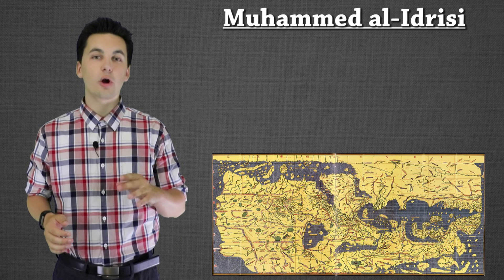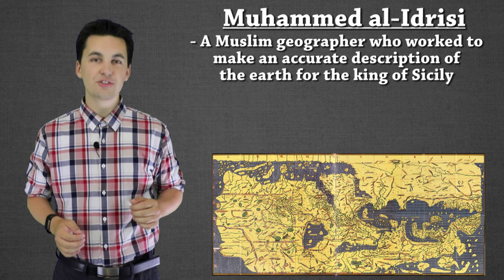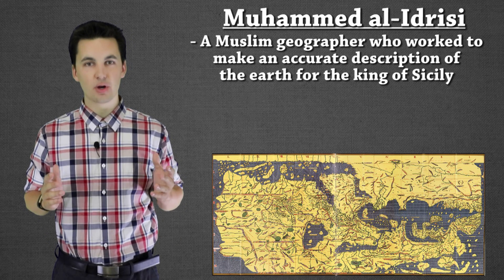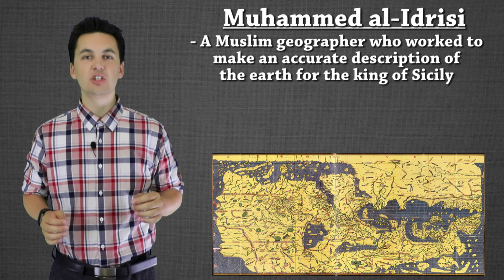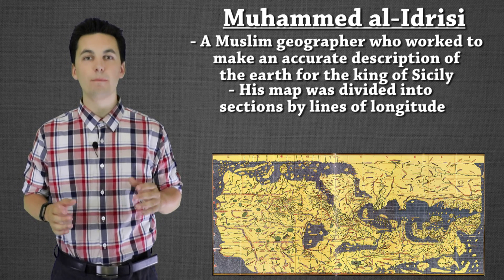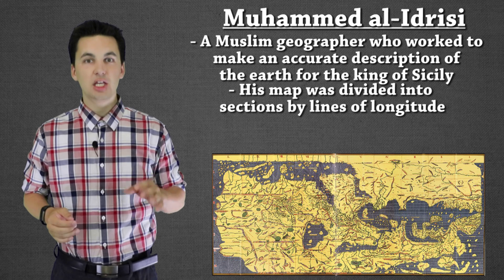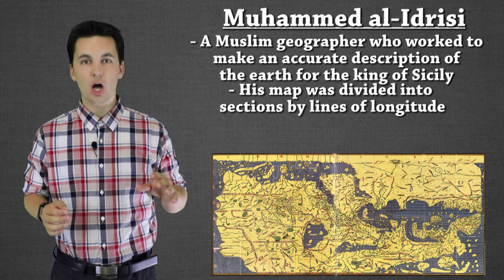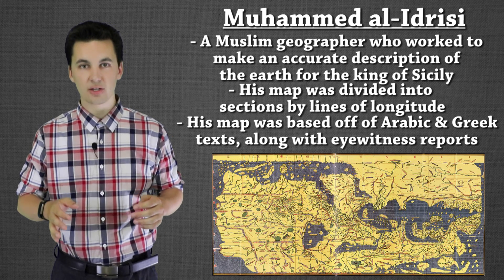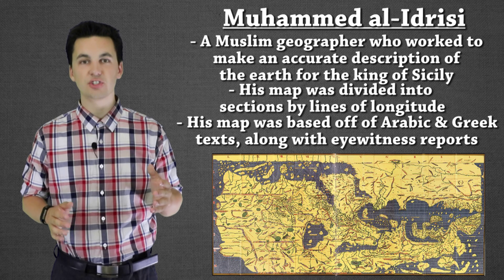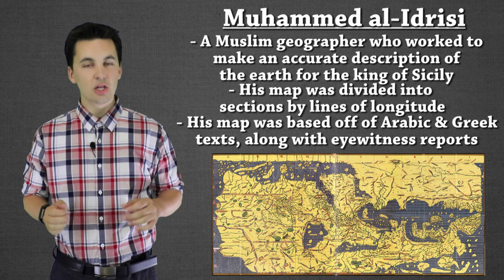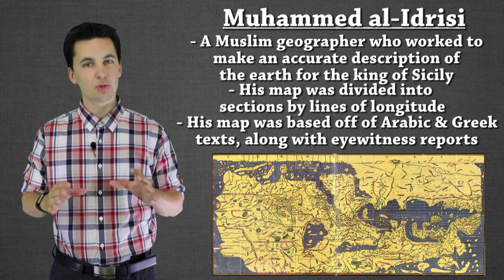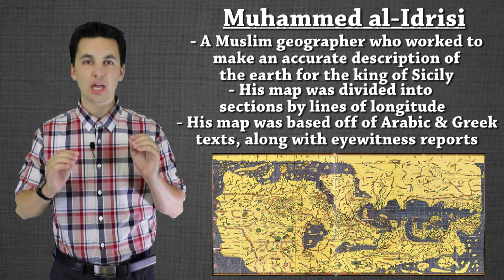Moving to the west of China, we have Mohamed Adresi, who worked for the king of Sicily to make one of the most accurate maps known at that time. He used lines of longitude to help make his map more accurate, and based all of his information off of Arabic and Greek texts along with first-hand accounts and eyewitness reports — trying to collect as much information as possible to project everything accurately.